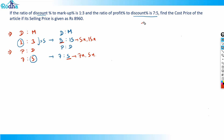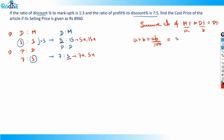We use the concept from the last question: the successive change of markup percentage and discount percentage equals profit or loss percentage. The formula is: a + b + (a × b)/100 = profit percentage. Here, a is the markup percentage, which is 15x, and b is the discount percentage.